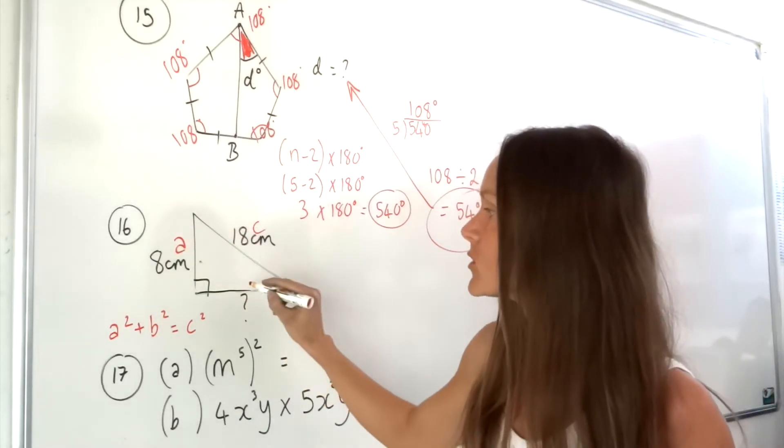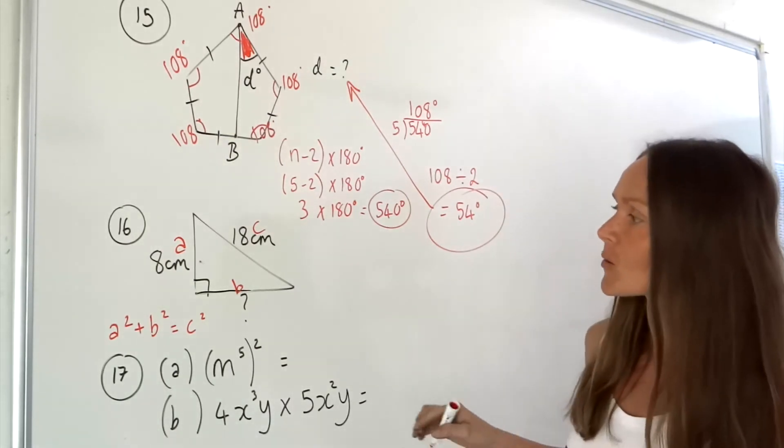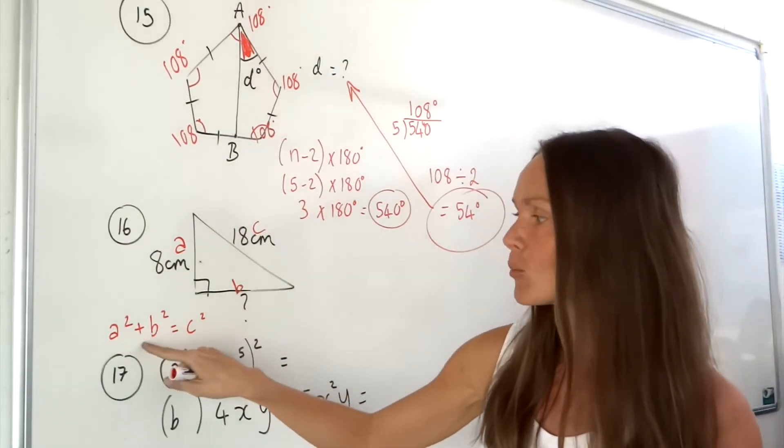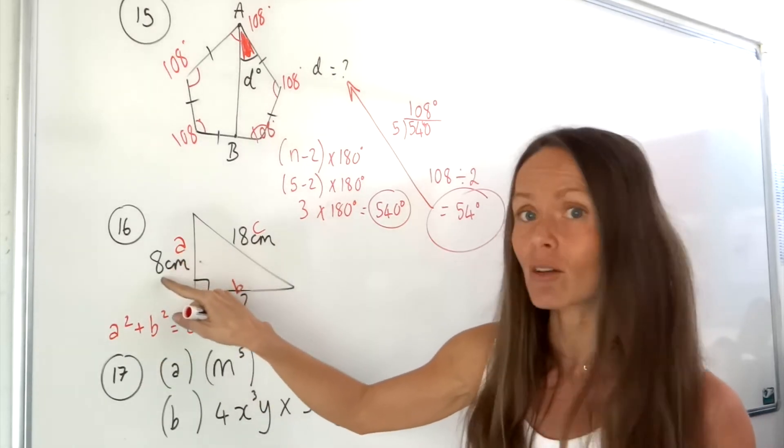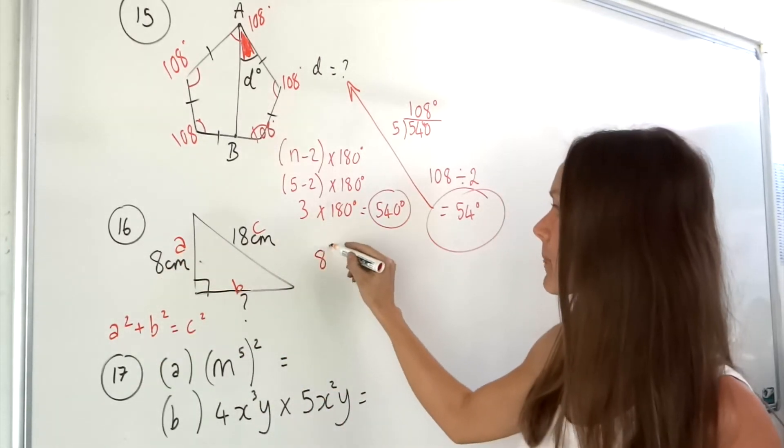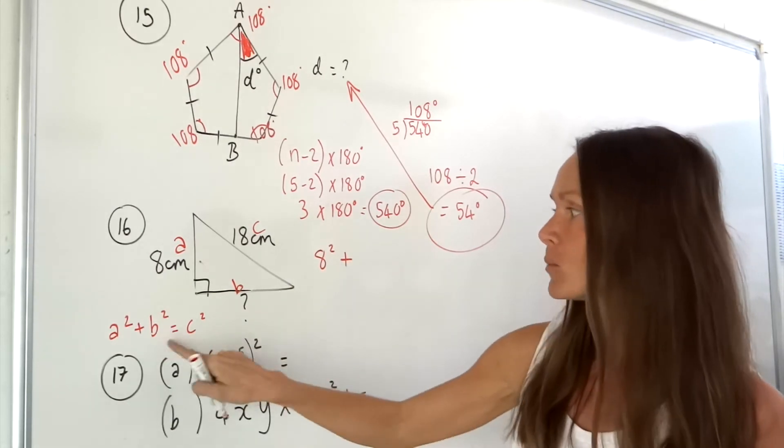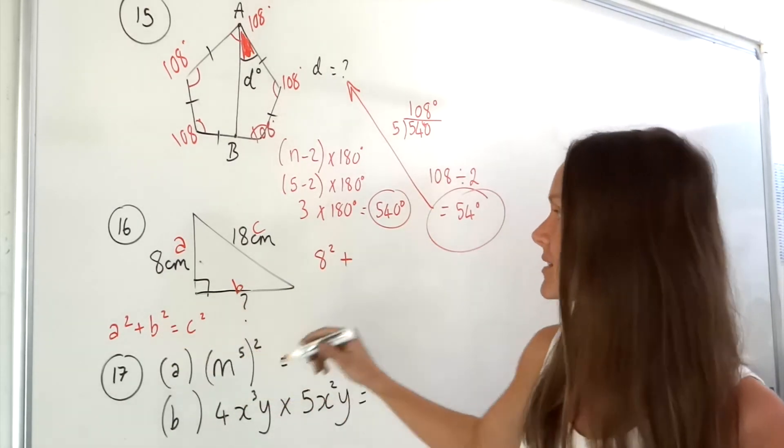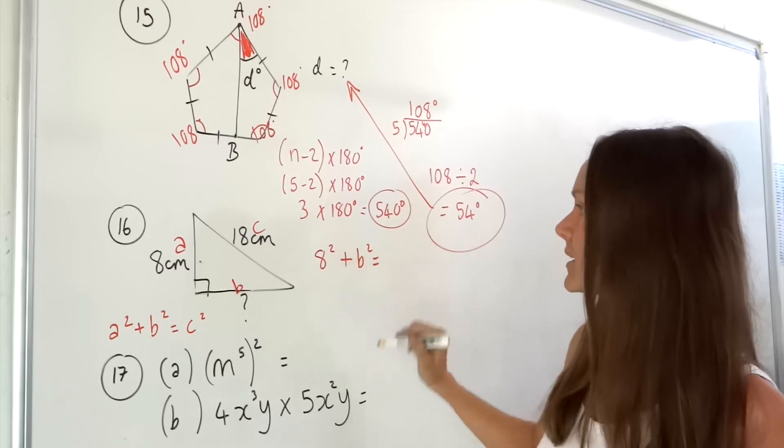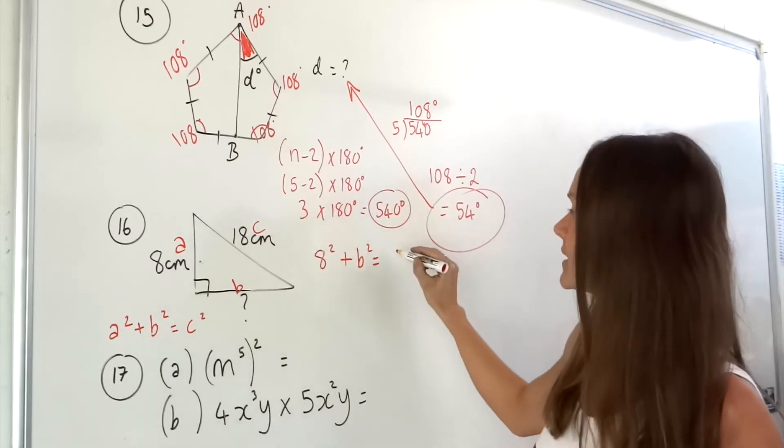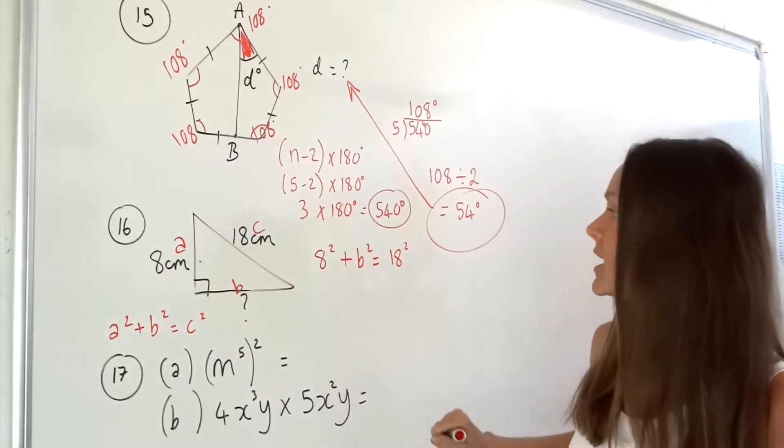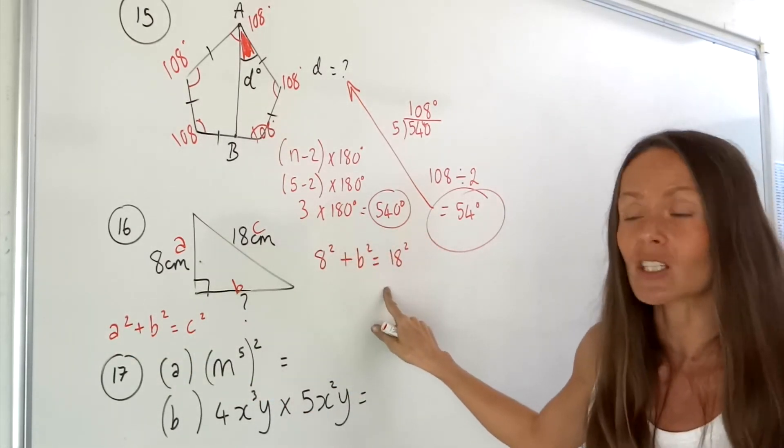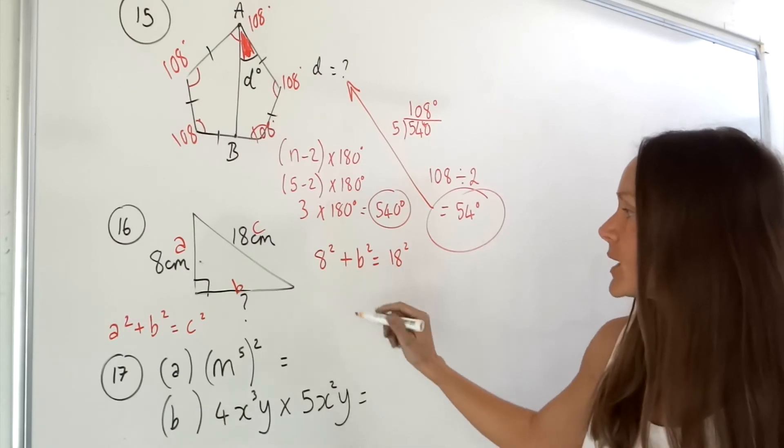If we substitute what we know into Pythagoras's theorem, instead of saying a squared we can write down 8 squared. B squared, well we don't know b so that one just stays the same. And instead of c we can write 18, so we've got 18 squared. I've just plugged those values into Pythagoras's theorem.